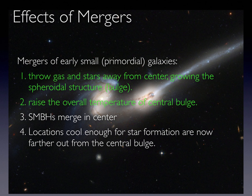Galaxy mergers increase the mass and size of a galaxy's spheroidal structures, i.e. the central bulge and dark matter halo. As matter falls toward the supermassive black holes, the black holes will begin to feed again. If each galaxy has a black hole, they will eventually merge to form an even larger black hole. Mergers also increase the temperature of the central bulge.